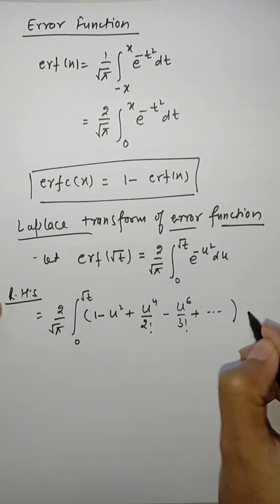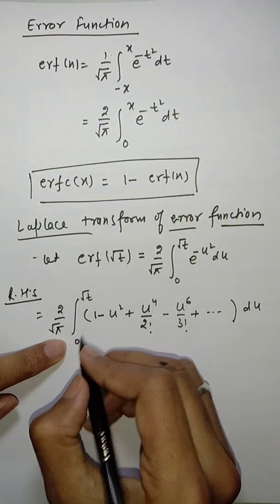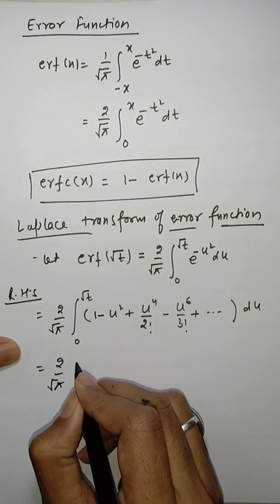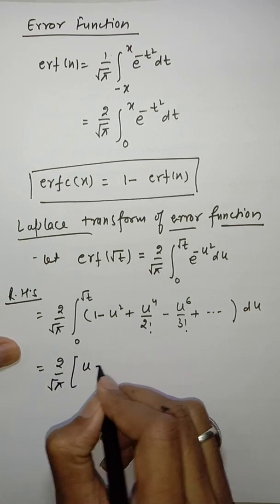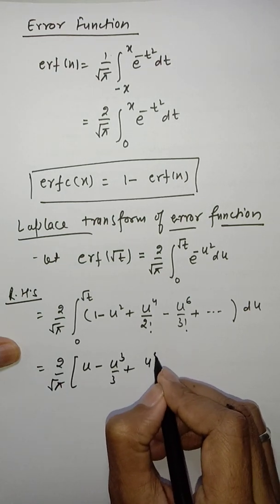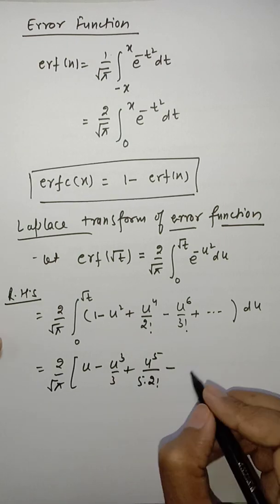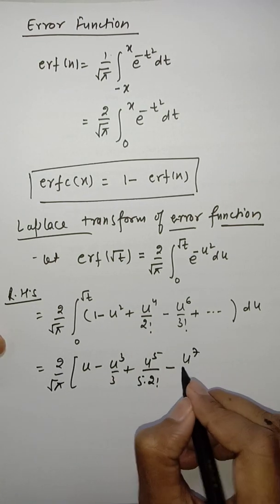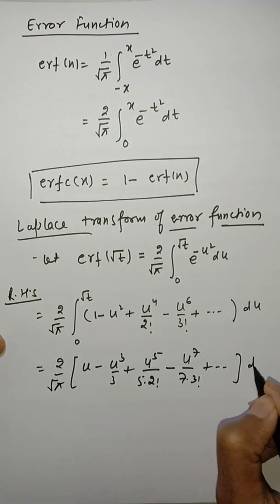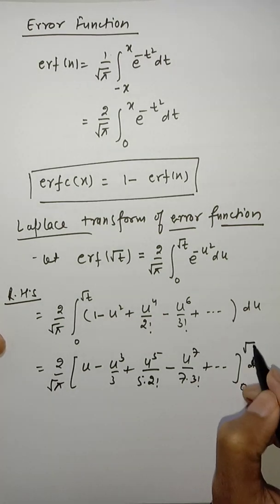Since the integral operator is linear, this becomes (2/√π) × [u − u³/3 + u⁵/(5·2!) − u⁷/(7·3!) + ...] evaluated from lower limit 0 to upper limit √t.